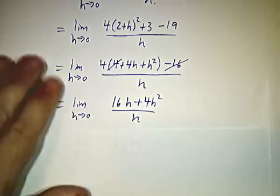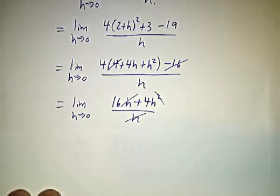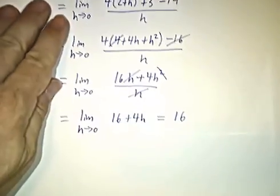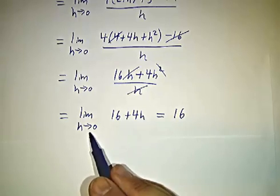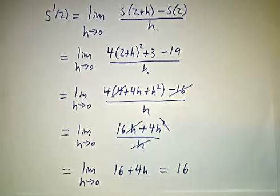Well, that cancels. This h and this h squared cancel against that h. And you're left with a limit of 16 plus 4h as h goes to 0. And just as before, the answer is 16. So you can work your limits in terms of as t goes to 2, or you can work your limits as h goes to 0. It gives the same answer either way. It's totally equivalent.